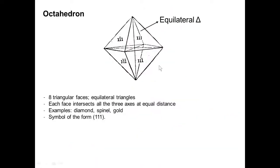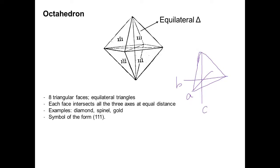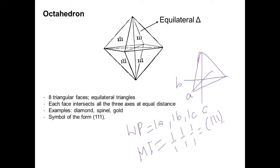Next is the octahedron, which has eight equilateral triangular faces. Each face intersects all three axes at equal distance. The Weiss parameters are 1a, 1b, 1c, and the Miller indices are 1/1, 1/1, 1/1 — giving 1 1 1. Examples are diamond, spinel, and gold.